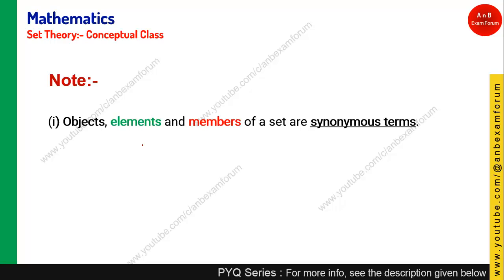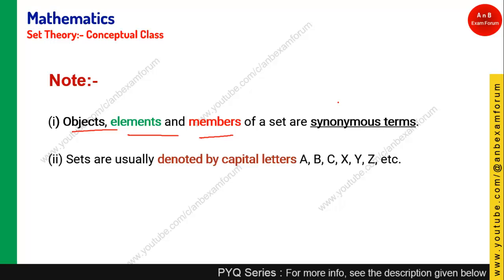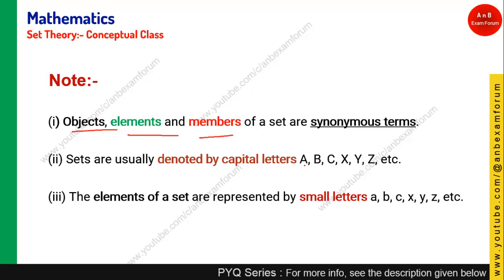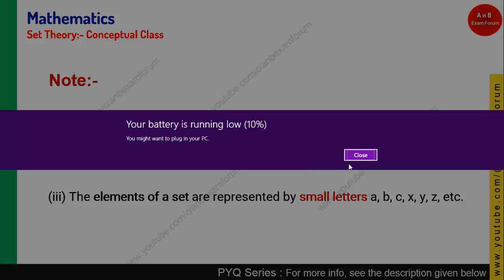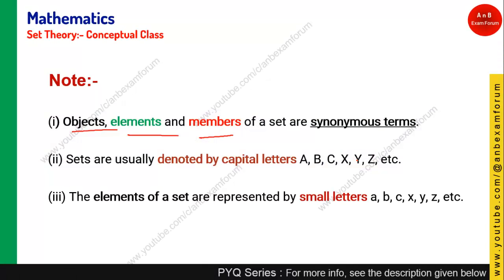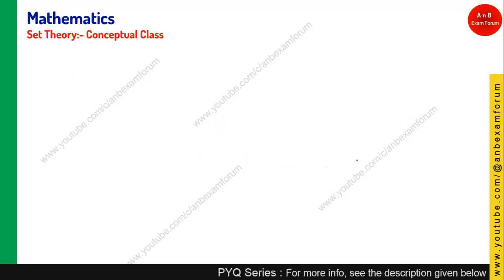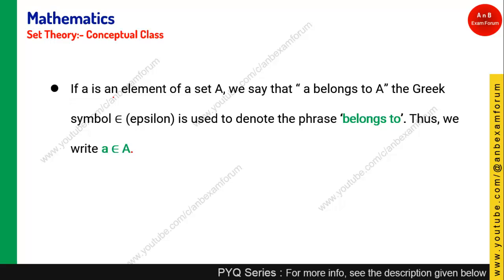A few important points to note in set theory: 'object,' 'element,' and 'member' are synonym terms — the speaker may use any of them, but they all mean the same thing. Remember, sets are denoted by capital letters — any letter, with no restriction. The elements of a set are represented by small letters. If an element 'a' is a member of set A, then we say 'a belongs to A,' written with the epsilon symbol ∈.